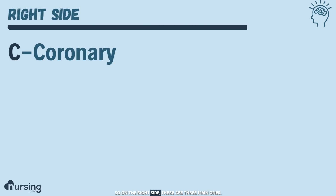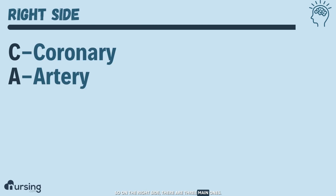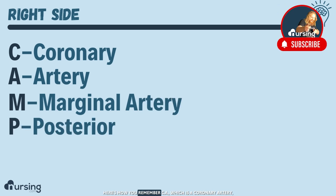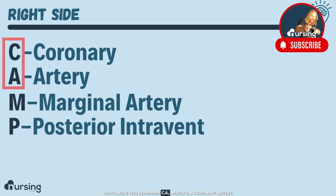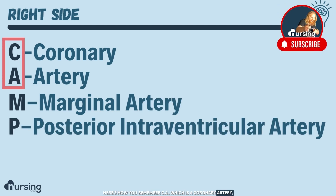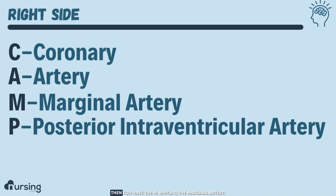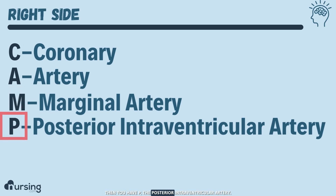On the right side, there are three main ones: the coronary artery, the marginal artery, and the posterior artery. Here's how you remember: C-A, which is the coronary artery, makes up the first part of the mnemonic — CAMP. So the right CA is the coronary artery. Then you have the M, which is the marginal artery. Then you have P, the posterior intraventricular artery.